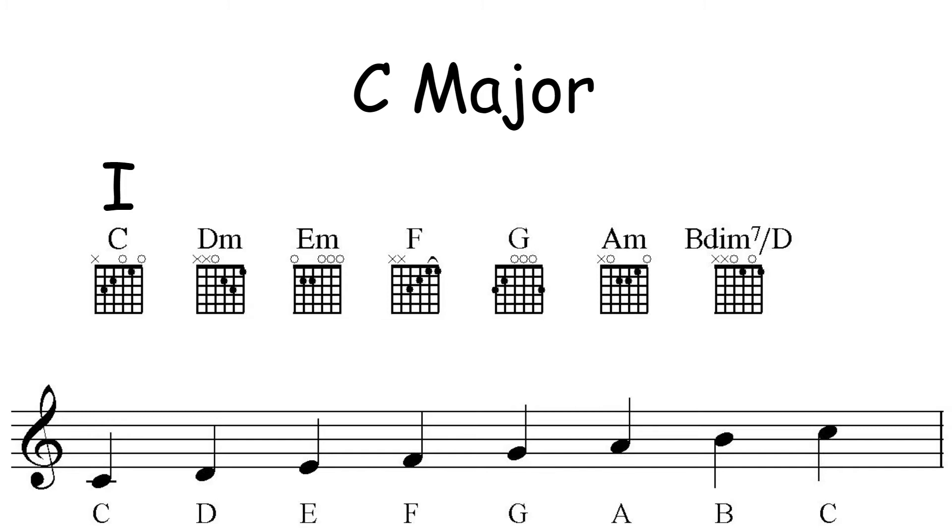Then the second chord would be D minor, since the second note is D. That pattern continues all the way down until you get to B, which would be the seventh scale degree.